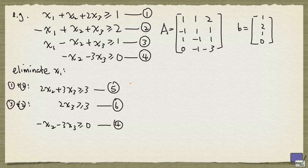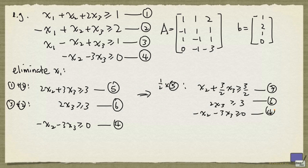Next we're going to eliminate x2, but before we do that we need to make sure the coefficient of x2 is 1 here. So we're going to multiply both sides of this inequality by 1 half.